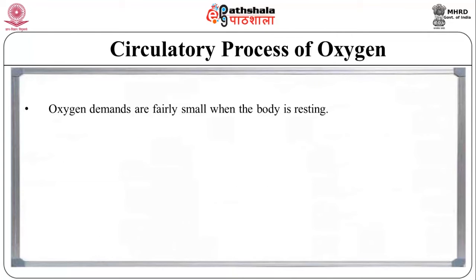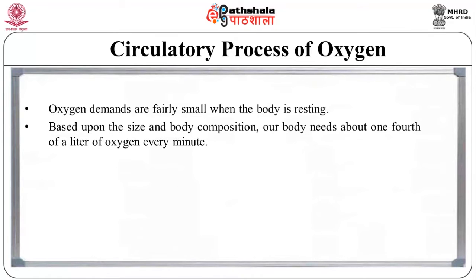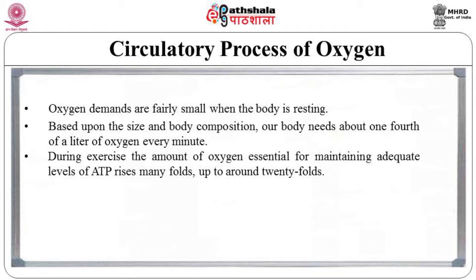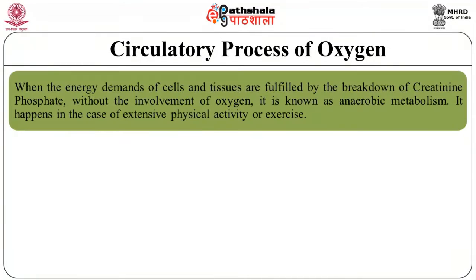Oxygen demands are fairly small when the body is at rest. Based upon size and body composition, it needs about one quarter of a litre of oxygen every minute. However, during exercise or physical work, the amount of oxygen essential for maintaining an adequate level of ATP rises up to 20 times or 20 folds. When energy demands of cells and tissues are fulfilled by the breakdown of creatine phosphate without the involvement of oxygen, it is known as anaerobic metabolism.